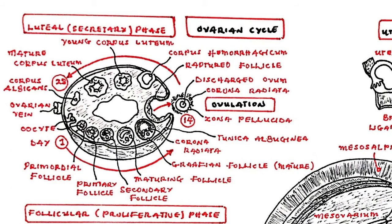In secondary follicles, a small cavity known as the antrum appears. The antrum is filled with follicular fluid and continues to expand at the expense of follicle cells, which are pushed away from the oocyte except for the single layer of cells known as the mature or Graafian follicle. Those cells secrete estrogen during the follicular or proliferation phase of the reproductive cycle. Follicles that cease to develop at any stage are said to be atretic. By day 14 of the ovarian cycle, a glycoprotein coat known as the zona pellucida surrounds the ovum of the mature follicle fully prepared for ovulation.